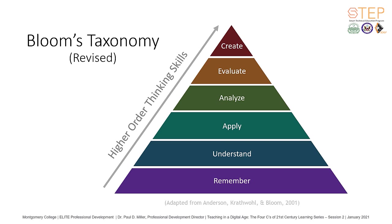We know this as Bloom's Taxonomy. The six categories of Bloom's Taxonomy can be thought of as degrees of difficulty — that is, the first ones must normally be mastered before the next one can take place. Bloom's Taxonomy was created in 1956 under the leadership of educational psychologist Dr. Benjamin Bloom in order to promote higher forms of thinking in education, including analyzing and evaluating concepts, processes, procedures, and principles, rather than just remembering facts or rote learning.